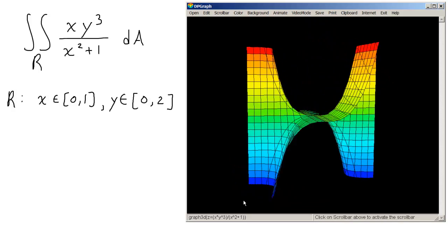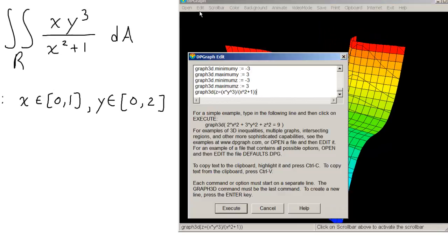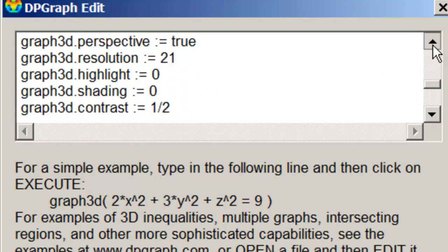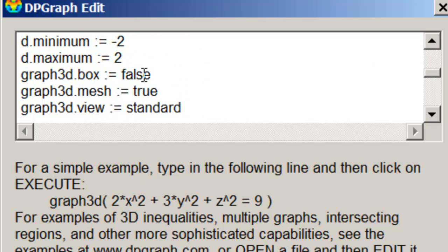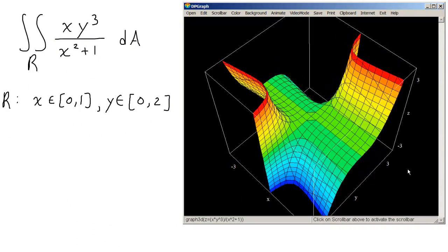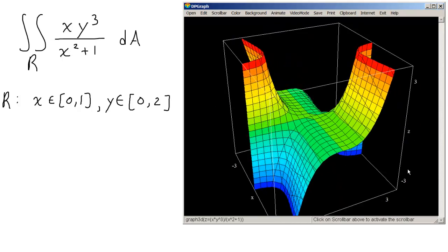But at this point, we don't really have any reference. We don't know what's x, y, and z, and we don't know what the scale on this thing is. So that's pretty easy to fix. We're going to go back to the edit menu, scroll up until we see 3D box. Make that true. Click execute. And now we can see what our x, y, and z range is. x goes from negative 3 to 3, y goes from negative 3 to 3, z goes from negative 3 to 3.